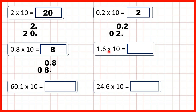Now for 1.6 times 10, we can write out 1.6, copy down the decimal point, and we're multiplying by 10, so we can move the digits 1 square to the left. Now the decimal point is at the end, so we have a whole number — that's 16.